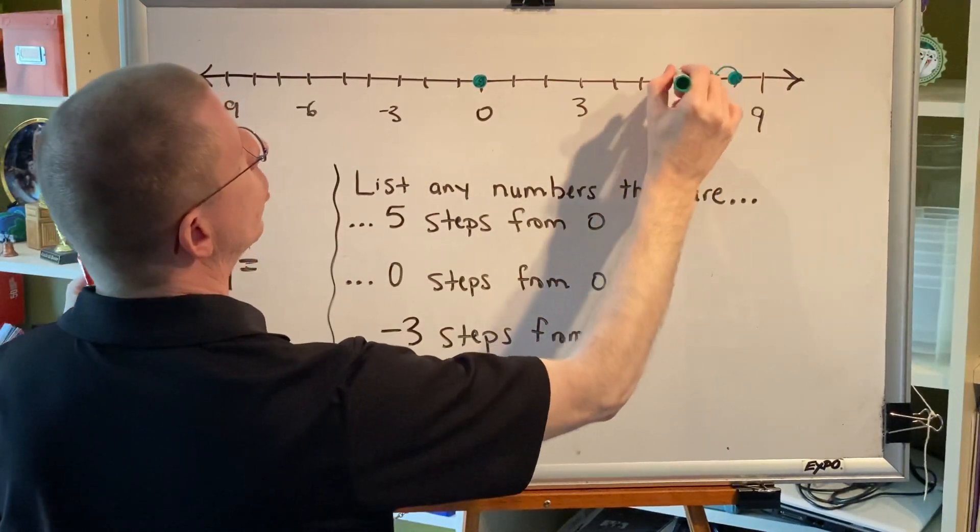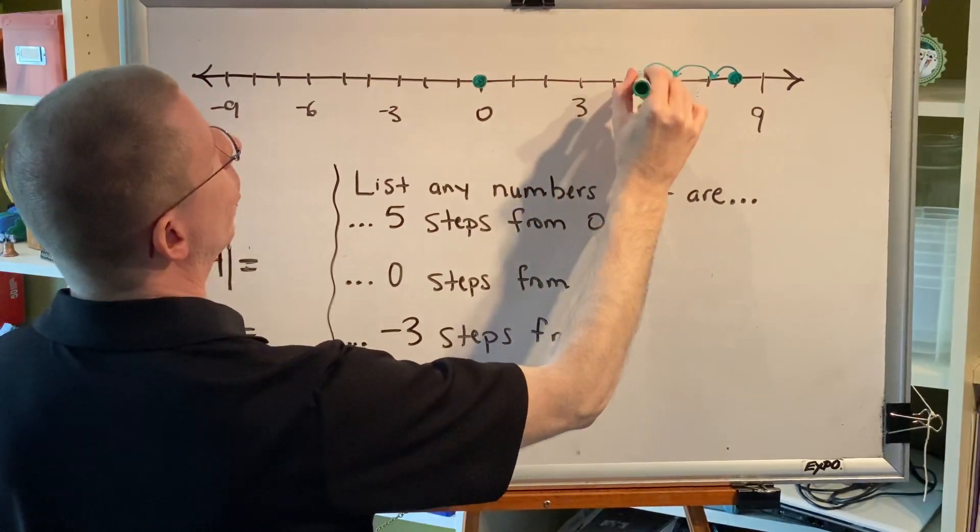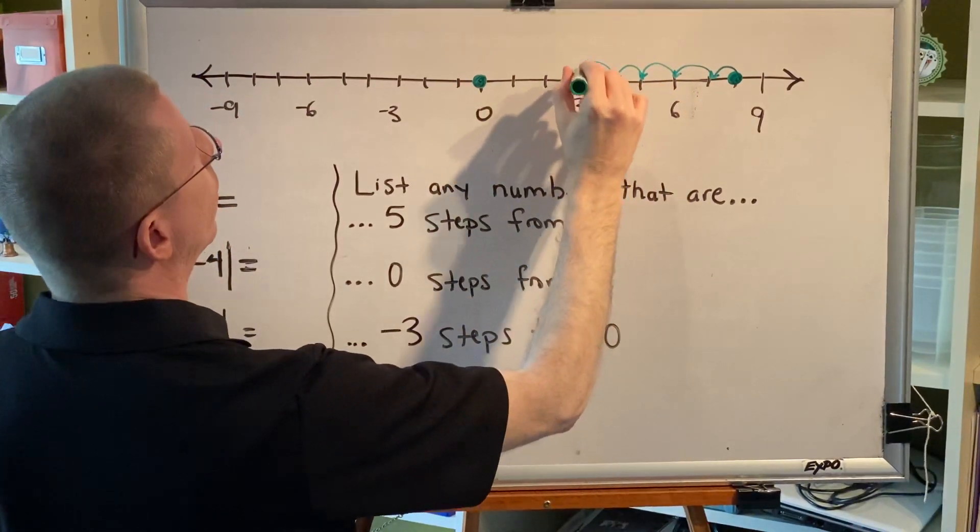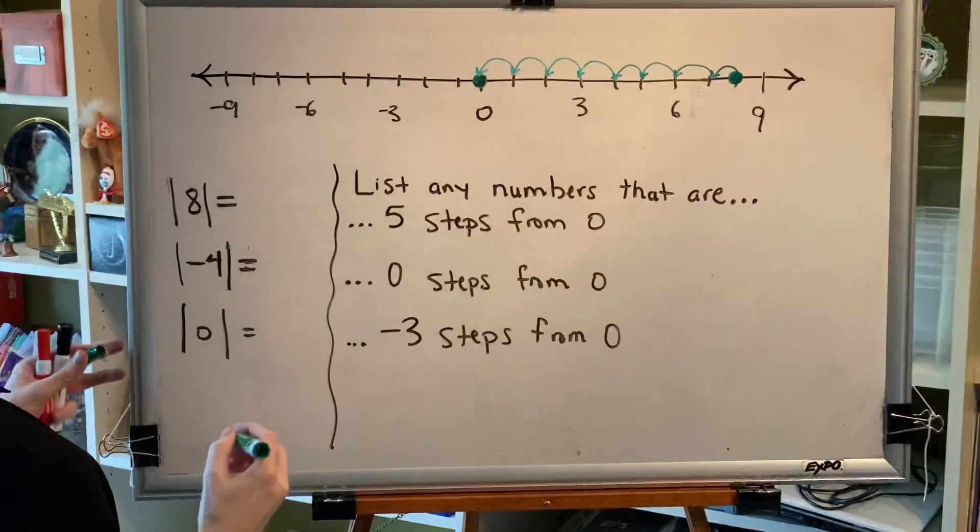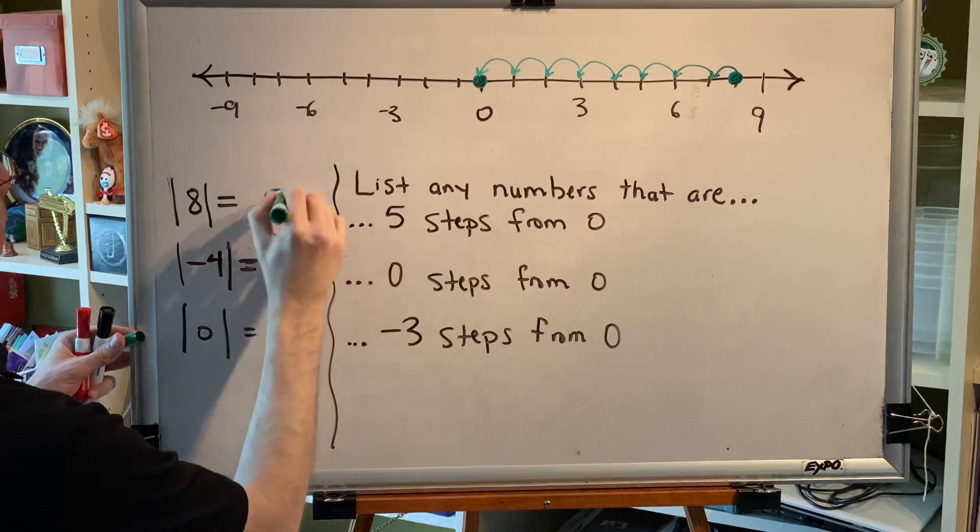One, two, three, four, five, six, seven, eight. Therefore, the absolute value of eight is eight.